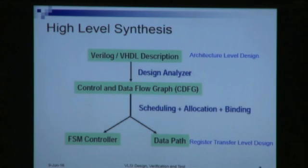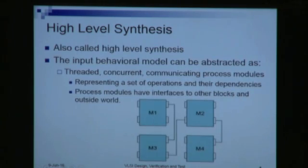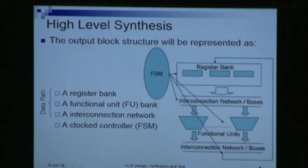Given this control and data flow graph, we will perform scheduling, allocation, and binding on them and ultimately obtain a controller and a data path. Architectural synthesis is also called high level synthesis. The input behavioral model is abstracted as threaded component communicating processes. These processes represent the operations and how the data is transformed through these operations. Process modules have interfaces to other blocks and the outside world. The output of the high level synthesis step is a data path and control path. The data path is composed of a set of registers or a register bank, a functional unit bank, and the interconnection network.